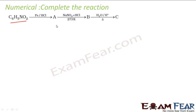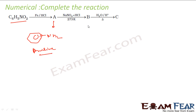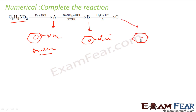The next reaction: nitrobenzene reacts with Fe and HCl. What will happen is the NO2 group will be converted to NH2. So A will be NH2 — that is aniline. When aniline reacts with NaNO2 and HCl, it will form a diazonium salt — N2Cl — that is benzene diazonium chloride. When you react this with water, it will become phenol.